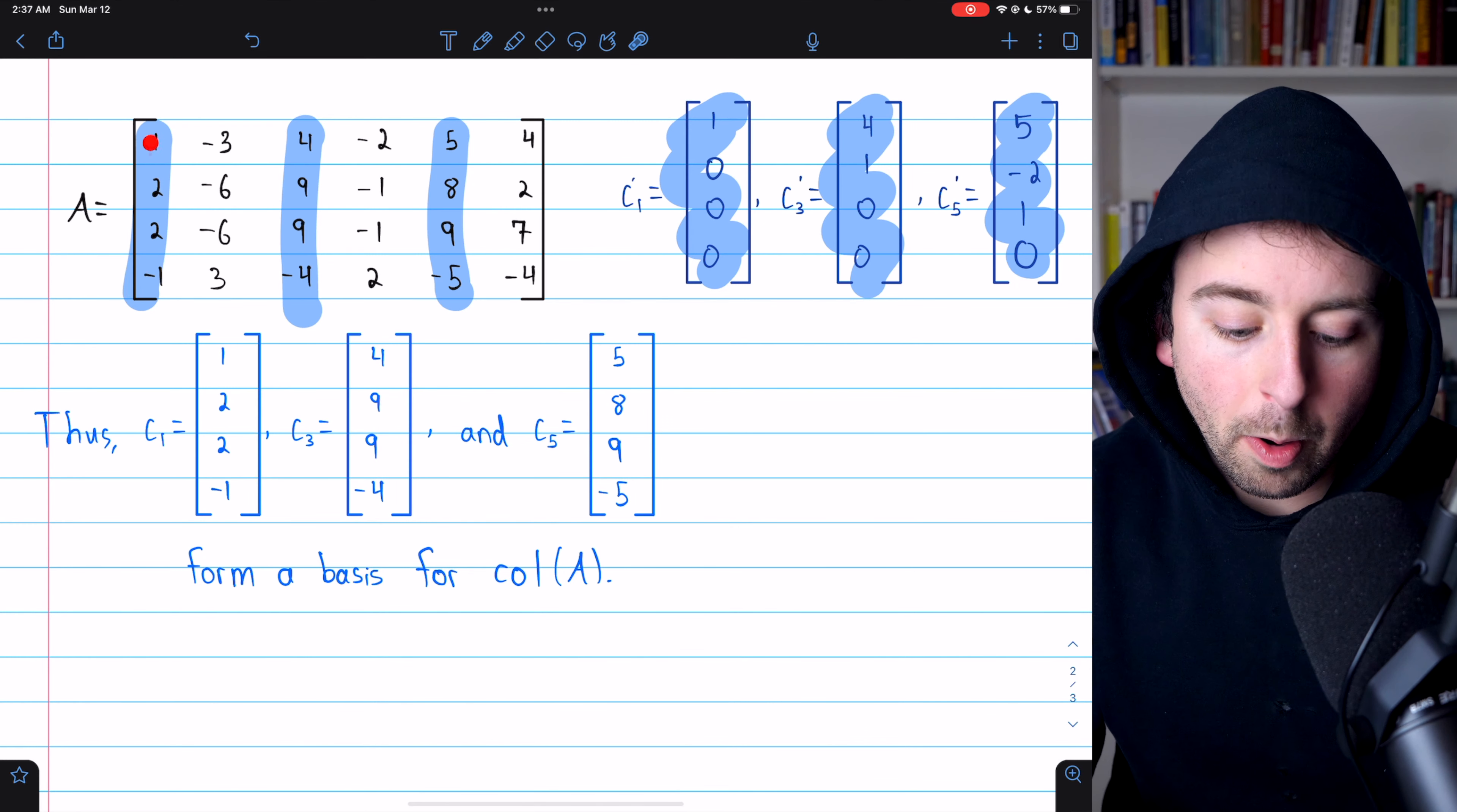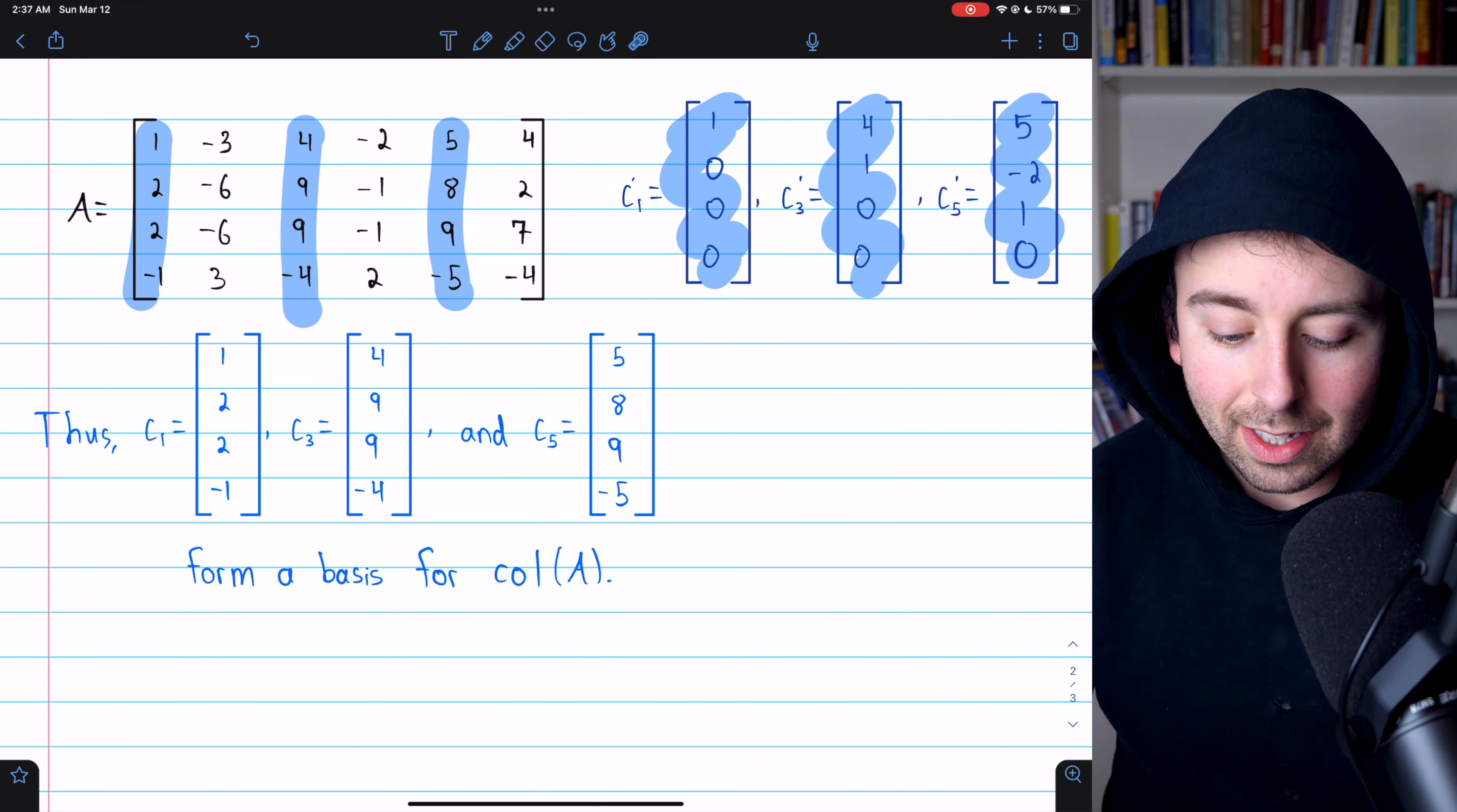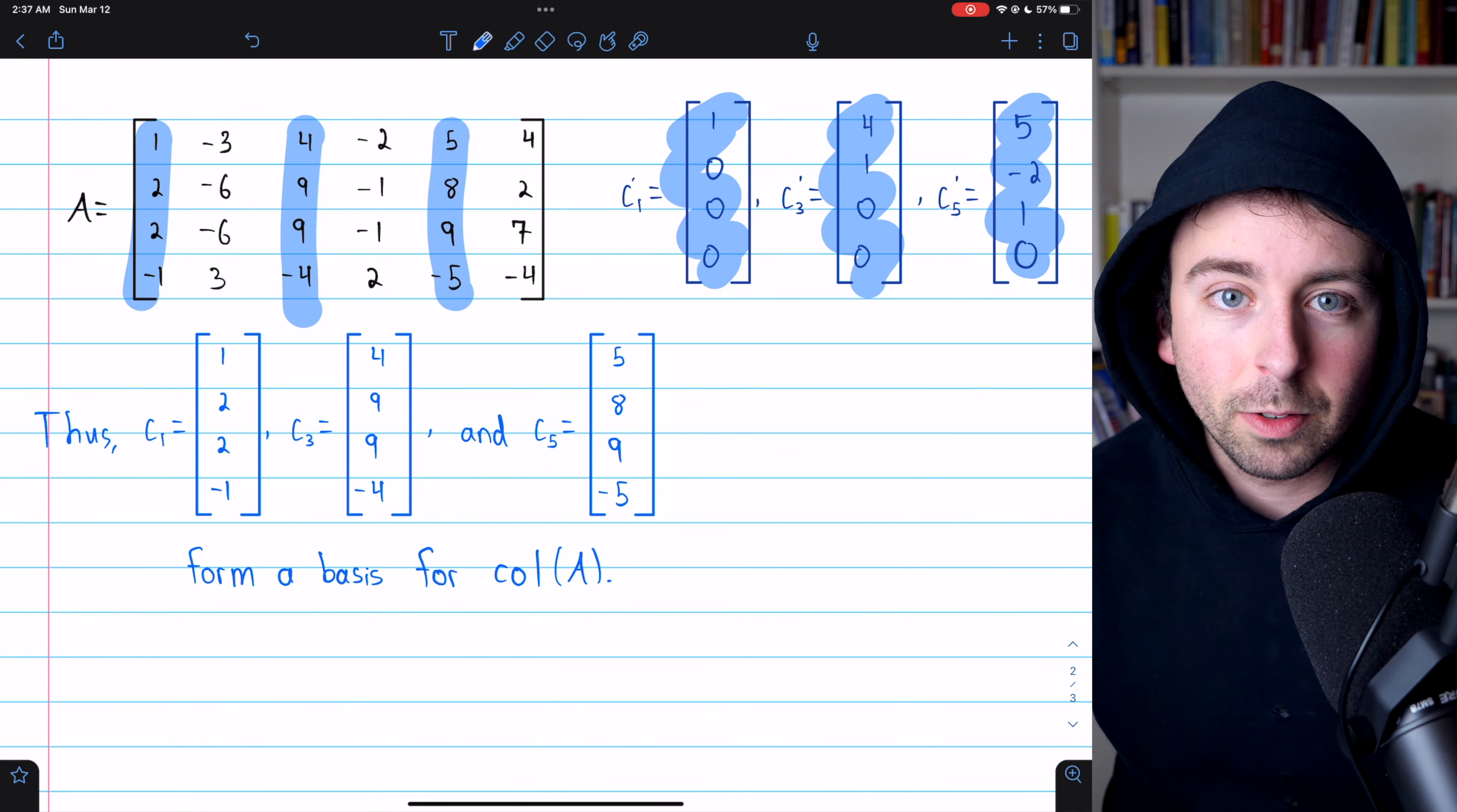so the first column from our original matrix will be part of the basis for the column space, and so on. That's how we get this basis for the column space. We can see that the dimension of the column space then is three, because there are three vectors in the basis.